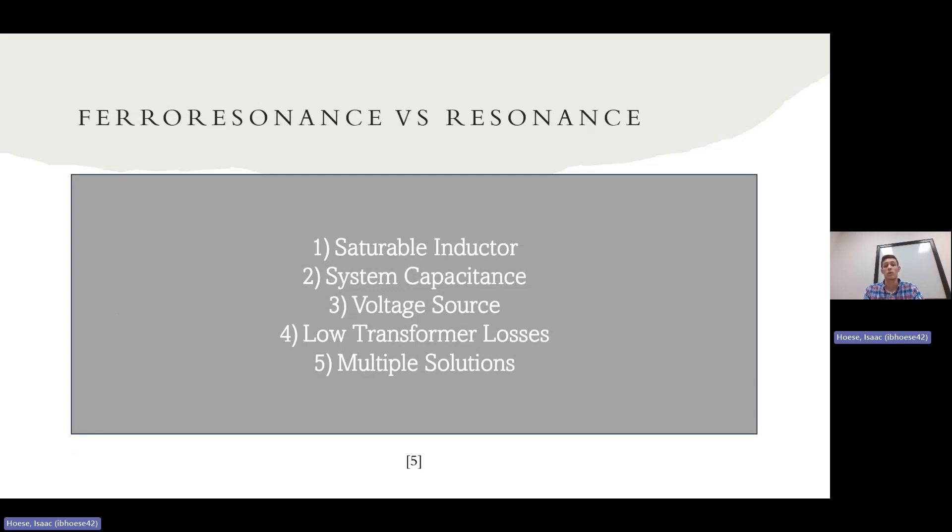Number four is low transformer losses. And five is multiple solutions. And the multiple solutions is referring to the KVL equation. And that comes from the varying inductance of the transformer. That's why there's multiple solutions. The inductance could be different values, and we'll see that in just a few seconds.